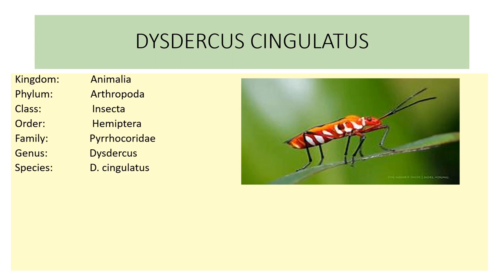Dysdercus cingulatus shows the following systematic position: Kingdom Animalia, Phylum Arthropoda, Class Insecta, Order Hemiptera, Family Pyrochoridae, Genus Dysdercus, Species cingulatus.